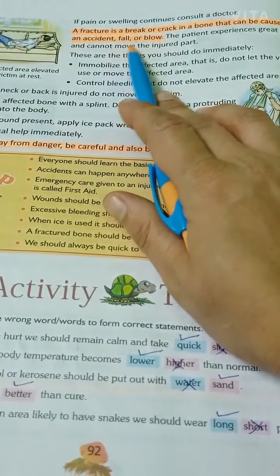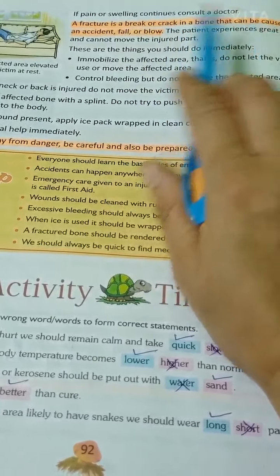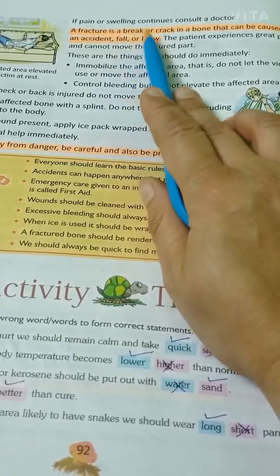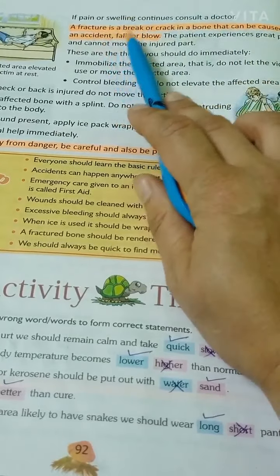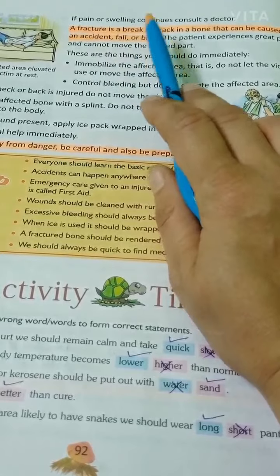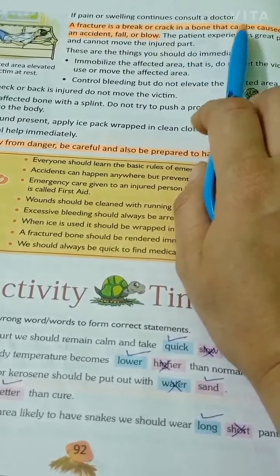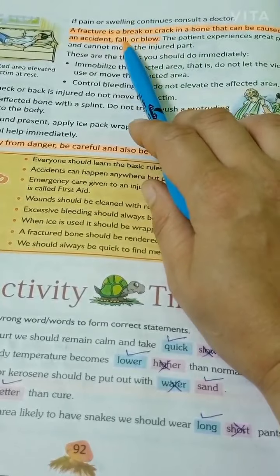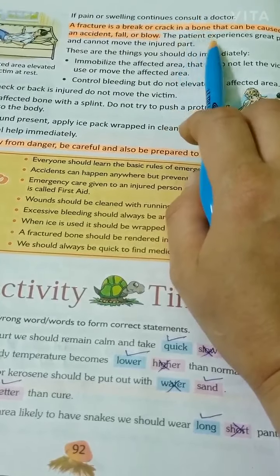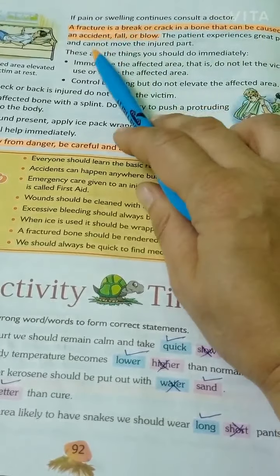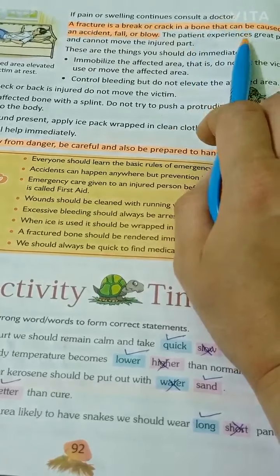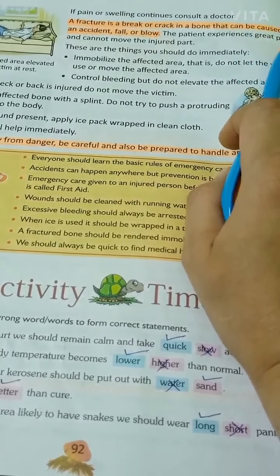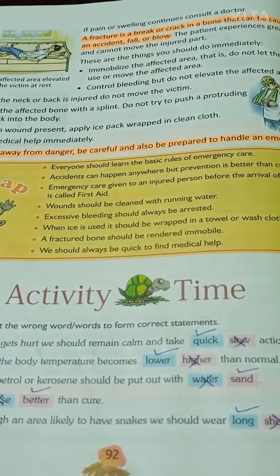A fracture is a break or crack in a bone that can be caused by an accident, fall or blow. Highlight this sentence. Fracture हड्डी में टूटना या दरार है जो accident, गिरने या झटके के कारण हो सकता है। The patient experiences great pain and cannot move the injured part — बहुत ज़्यादा pain होता है और injured part को हिला भी नहीं सकता।